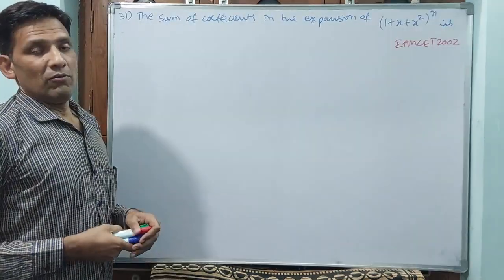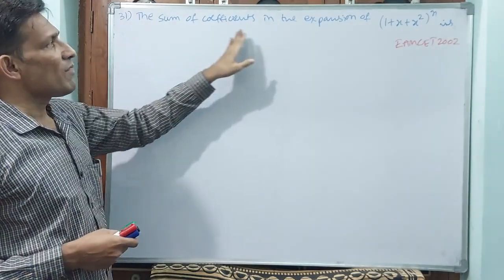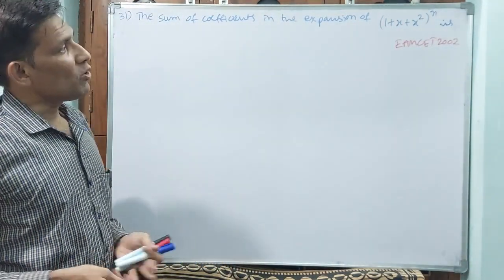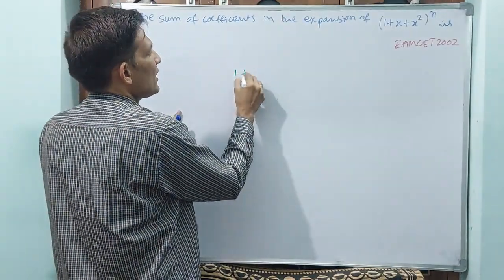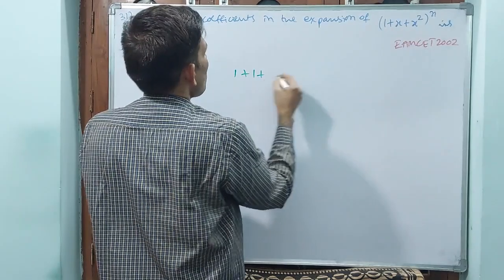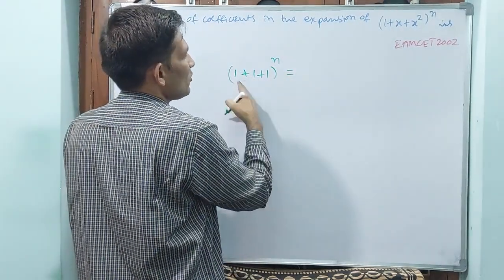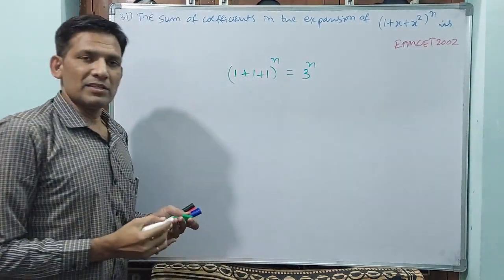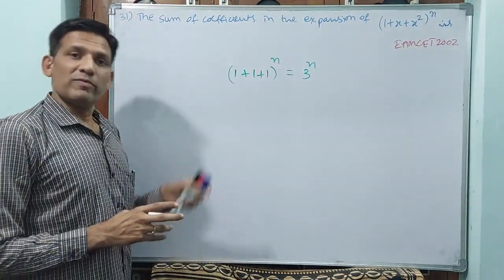Let us go for the next question. This is also the same type — sum of coefficients in the expansion. Only coefficients we take: 1 plus x has coefficient 1, plus x has coefficient 1, all to the power of n. That equals 1 plus 1 plus 1 equals 3, so 3 power n. The answer for this question is 3 power n.